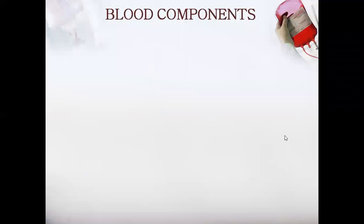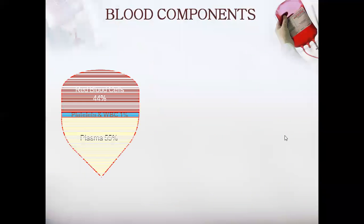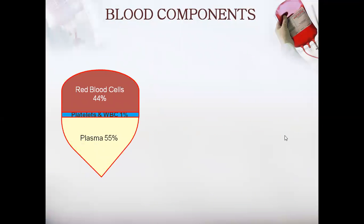Before studying plasma volume expanders, we should know the amount of plasma present in the blood. Blood components are divided into two major sections: plasma and blood cells. Plasma includes about 55% of the blood content, 44% is given to the red blood cells, and about 1% is composed of platelets and WBCs.